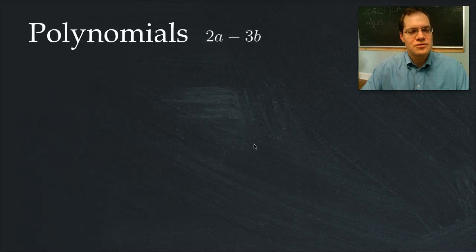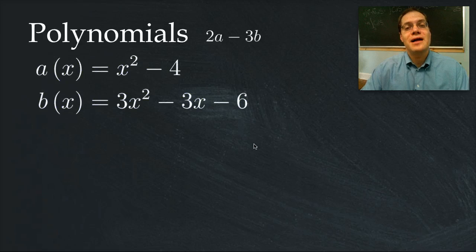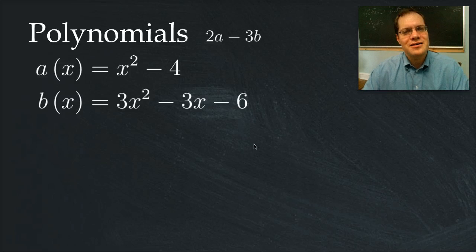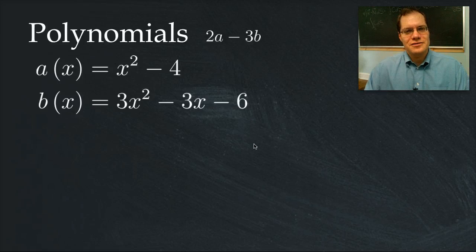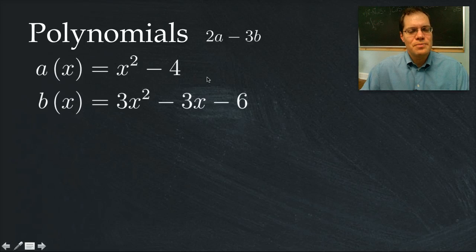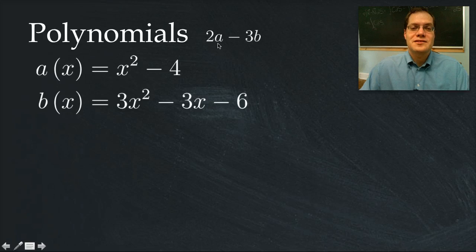The first thing to note is just how different polynomials are from geometric vectors. Geometric vectors are all about pictures. Polynomials are mathematical expressions. They have something in common, ability to be added and multiplied by numbers, but they're really as different as they could be from geometric vectors. Let's consider these two polynomials. We're after the same linear combination, 2a minus 3b.